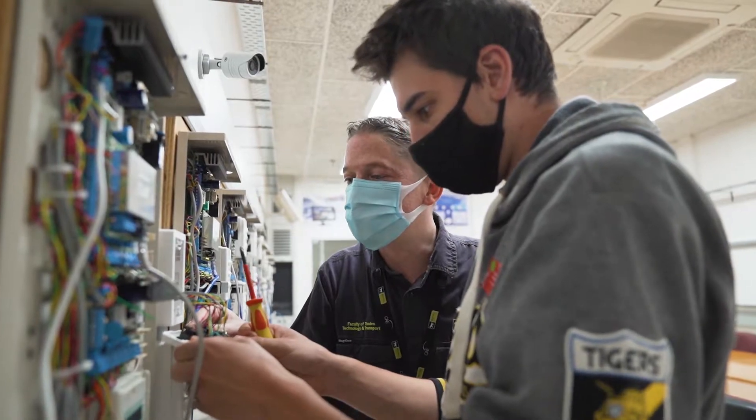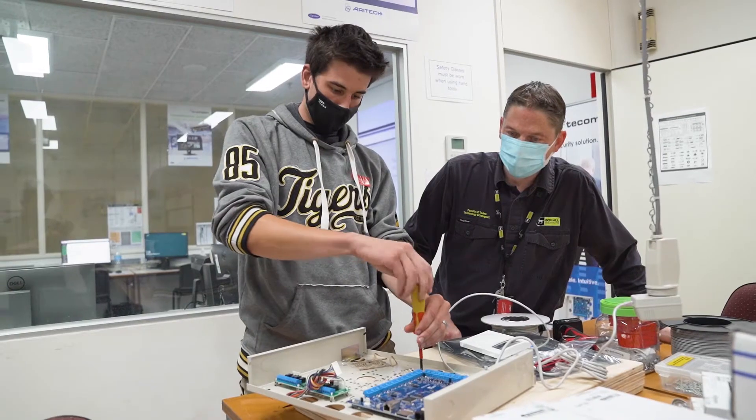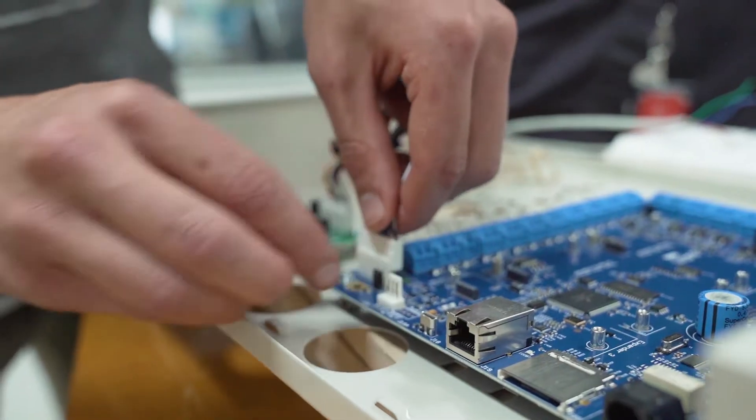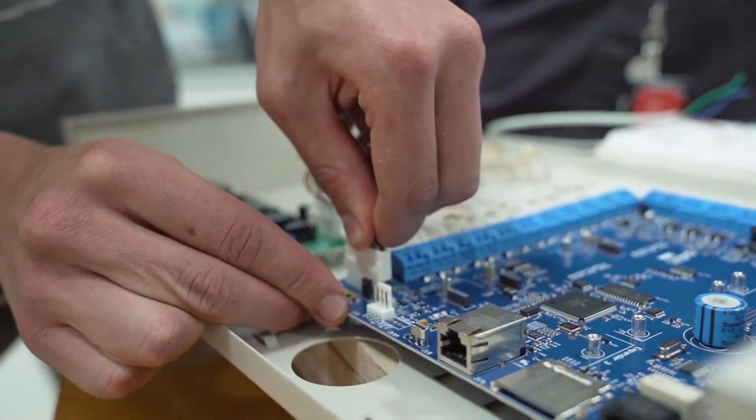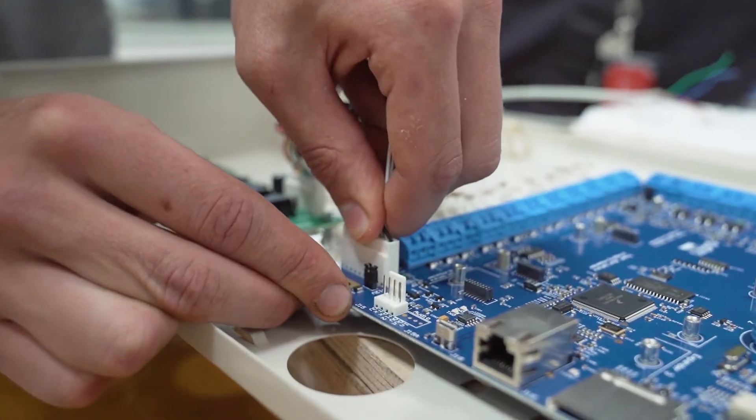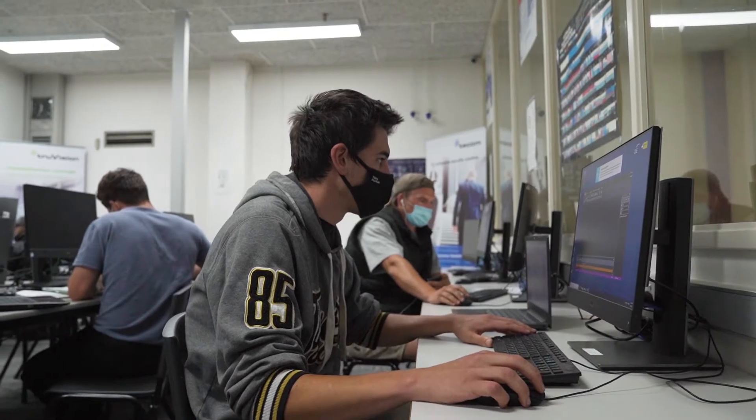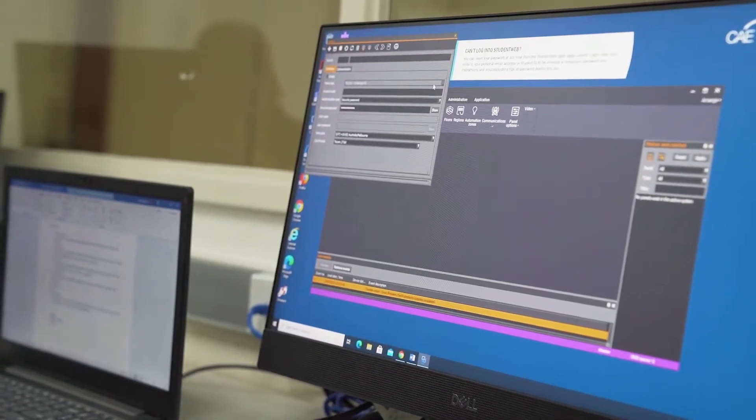The security technicians or security installers are apprentices when they first start off their qualification with us. They're engaged by an employer as an apprentice technician or installer within the security industry, and then they come through and do their training through a registered training organisation, in this case Box Hill.